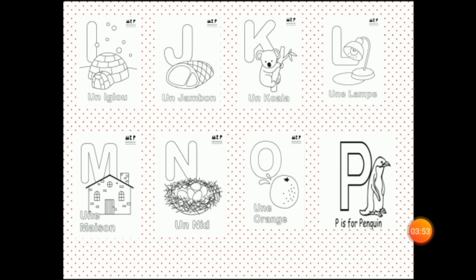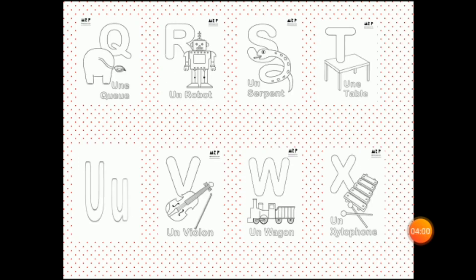O — Orange. P — Pingouin. Q — Queue, which means a tail. R — Robot. S — Serpent. T — Table. U — Usine. Usine means a factory.